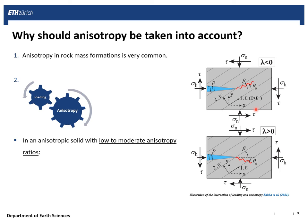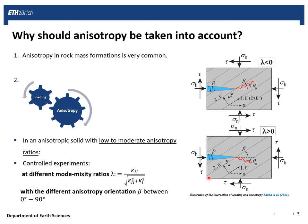For example, in this configuration in which the mode 2 SIF is negative, or we have negative mode mixity ratios, the effect of loading reinforces the effect of anisotropy. But in the case where we have positive mode 2 SIF or positive mode mixity ratios, the loading is competing with the anisotropy, and therefore the kink angle is in the negative region and is not close to the weakest plane of material.